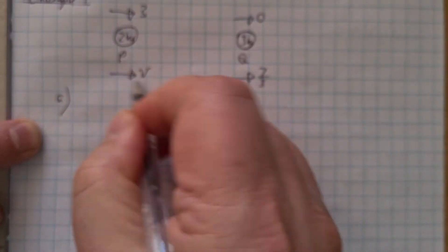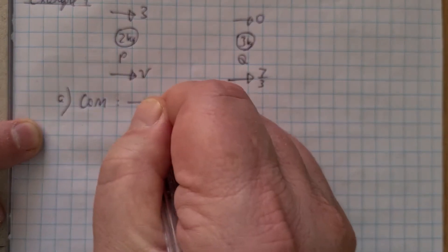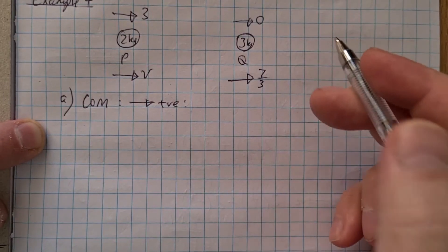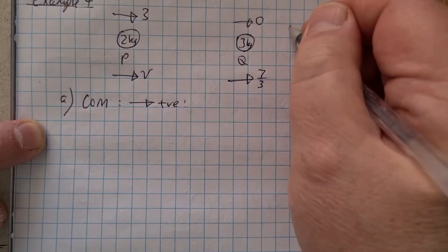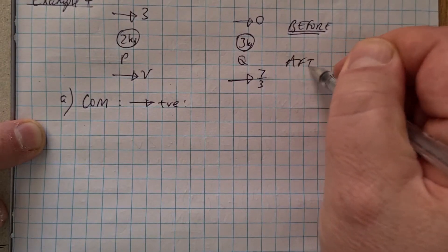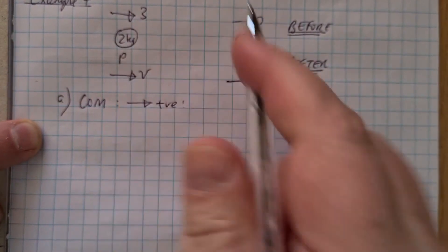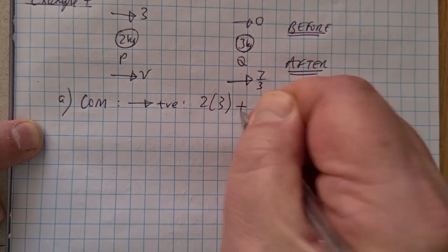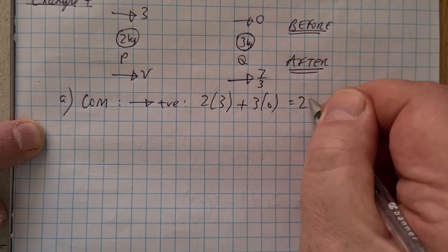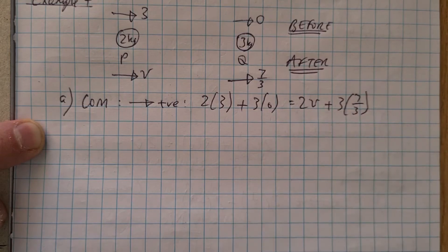To find the velocity of P after the collision, we use our conservation of momentum equation. State which direction you're taking as positive — all arrows are going to the right. Our total momentum before the collision: I always put values before above the particles and after below. So we have mass times velocity for P, which is 2 × 3, plus 3 × 0, because Q is initially at rest. That equals 2V plus 3 × (7/3), our total momentum after the collision.